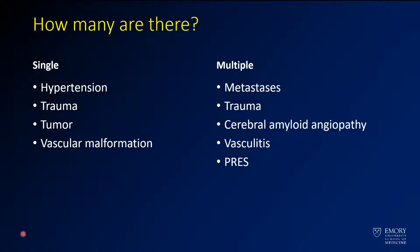When thinking about how many hemorrhages there are, you can generally lump it into one of two categories: a single hemorrhage or multiple hemorrhages. For single hemorrhages, hypertension is by far the most common cause. Trauma can certainly cause single hemorrhages, and tumors and metastases can definitely be single, as can an underlying vascular malformation.